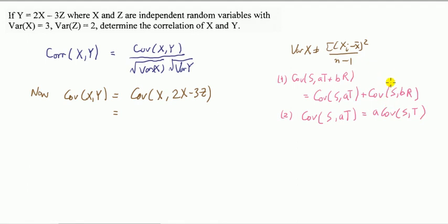So applying rules 1 and 2, I get this and this. Now the covariance of a random variable with itself is the variance. What's the covariance between X and Z? It's zero.